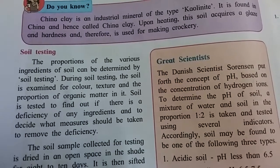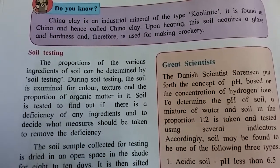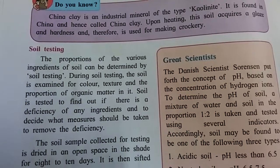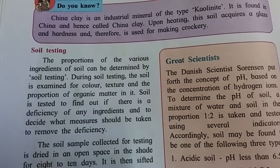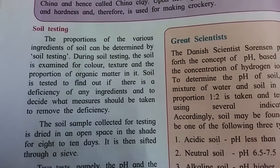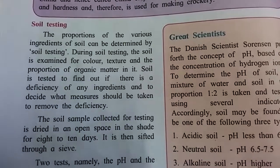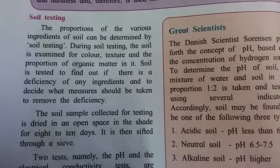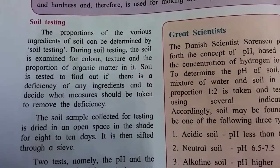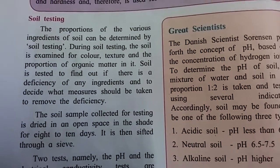Soil is tested to find out if there is a deficiency of any ingredient and to decide what measures should be taken to remove the deficiency. The soil sample collected for testing is dried in an open space or in a shed for 8 to 10 days, and then sifted through a sieve.